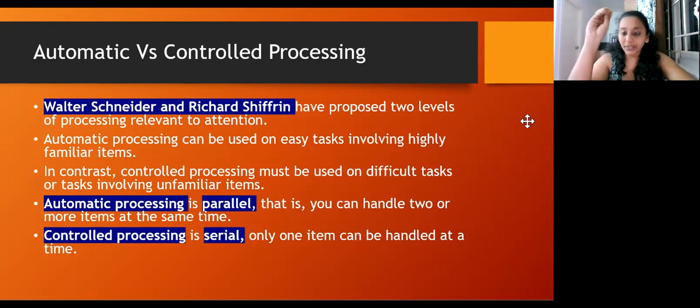Controlled processing is serial - only one item can be handled at a time. If I asked you to make saru and watch TV at the same time, but you're doing it for the first time, you'll be like, 'No, I have to focus on this thing. Did I put the tadka? Now I have to mix.' You'll be totally focused on that one thing. So automatic can be done with familiar things and is parallel processing, while controlled is done with difficult, unfamiliar things and is serial processing.